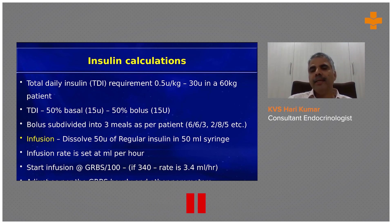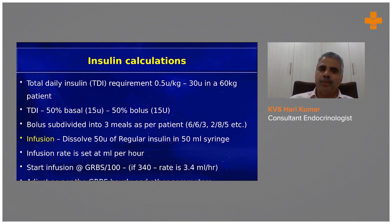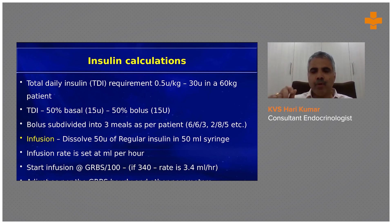This is only the starting dose. Thereafter, based on the glucose chart you are monitoring, you keep upgrading by calculating the daily requirement and adding supplemental insulin. For example, today you started with 30 units, tomorrow it may go to 40, the day after to 50 — depending on how much the patient is requiring in the given situation.